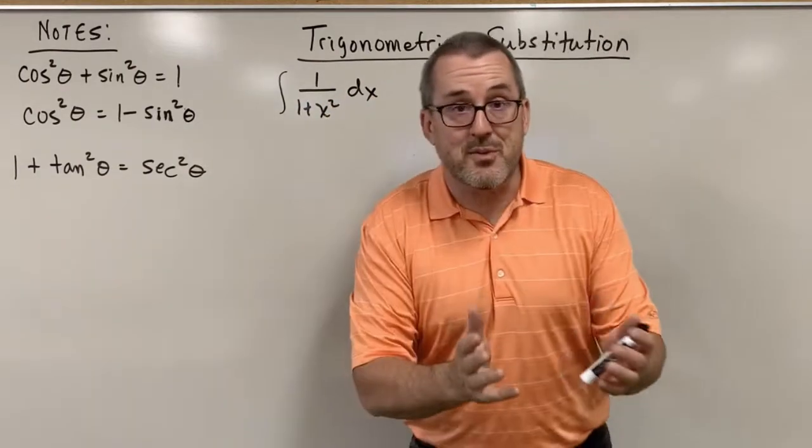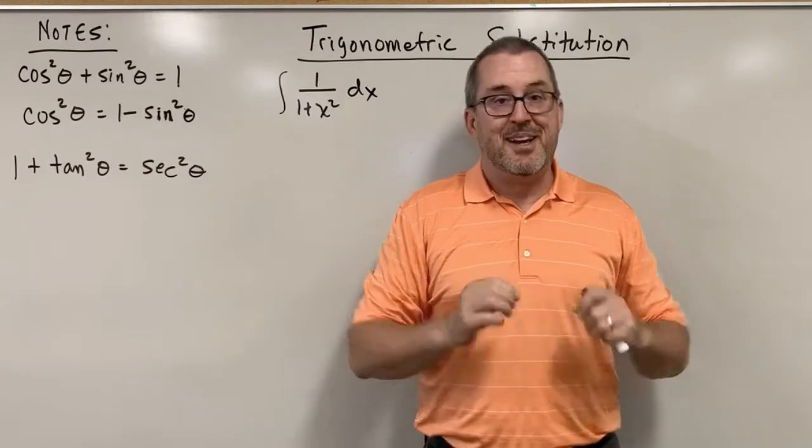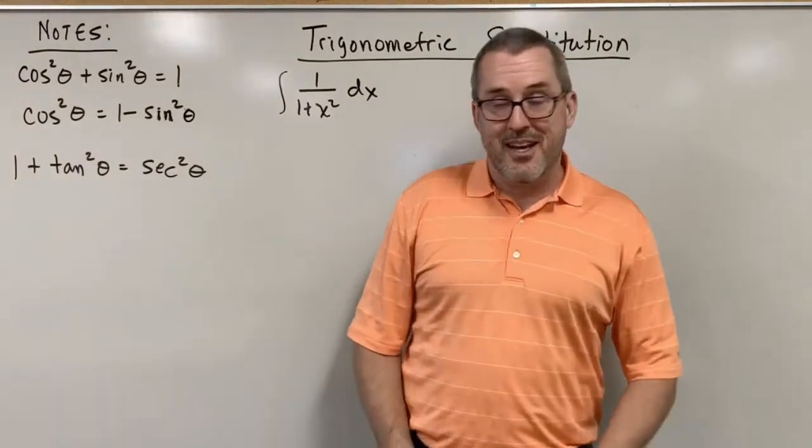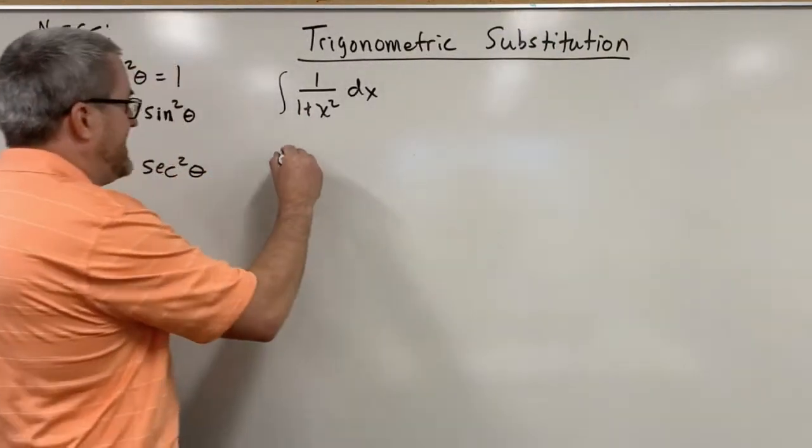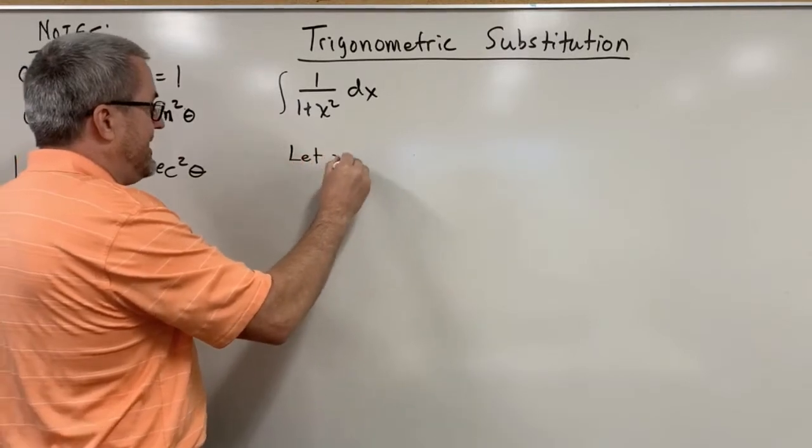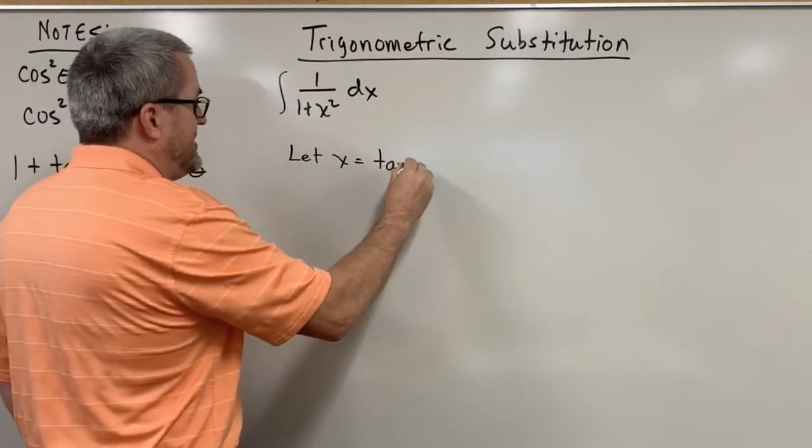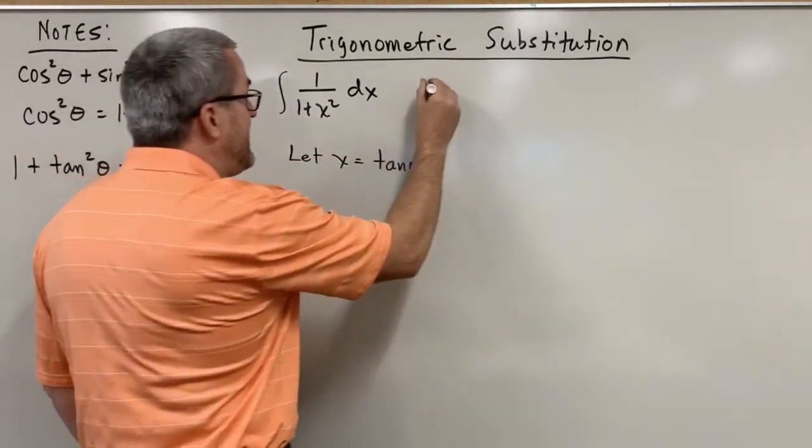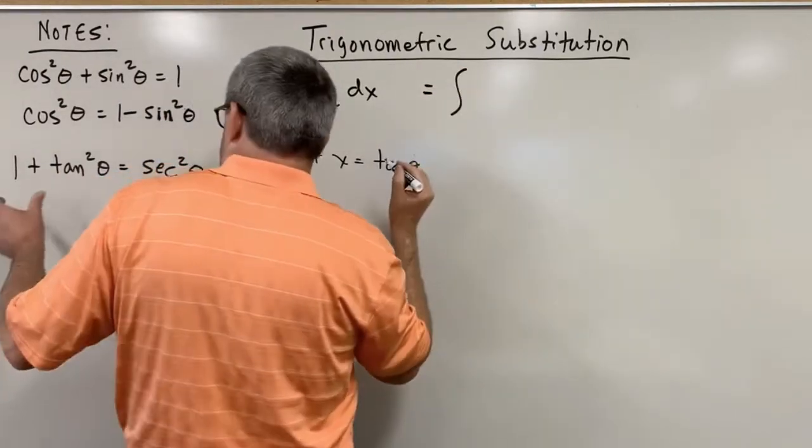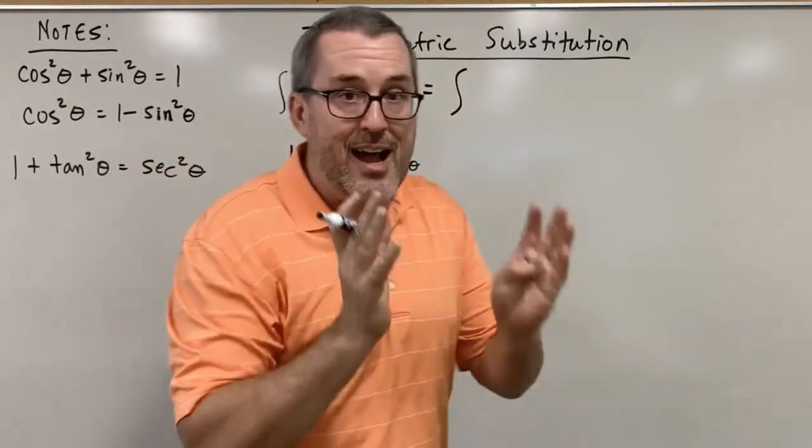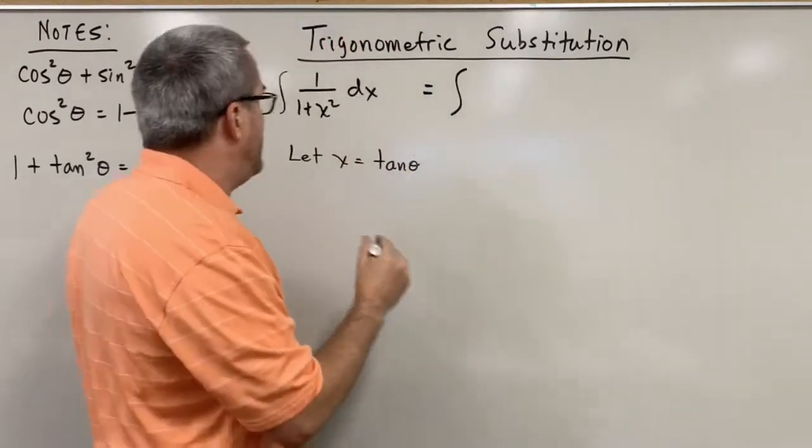So what we're going to do is make intentional deliberate choices here and then just deal with the consequences. The first choice we're going to make is this: we're going to let x equal tangent theta. The reason behind that is we're targeting, we're keeping our eye on that 1 plus tangent squared identity.